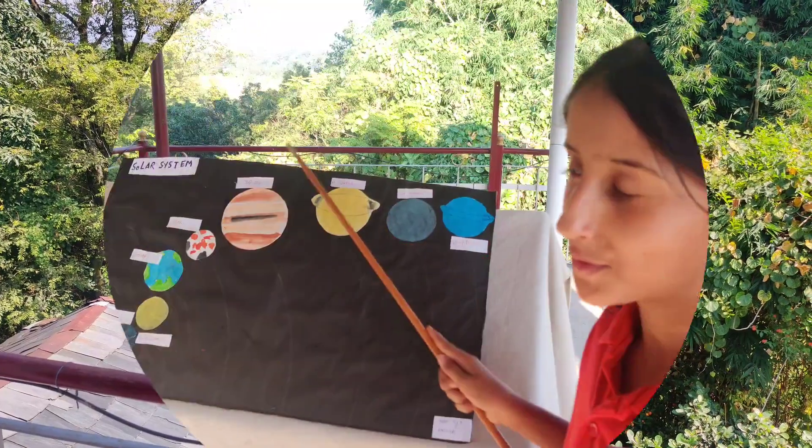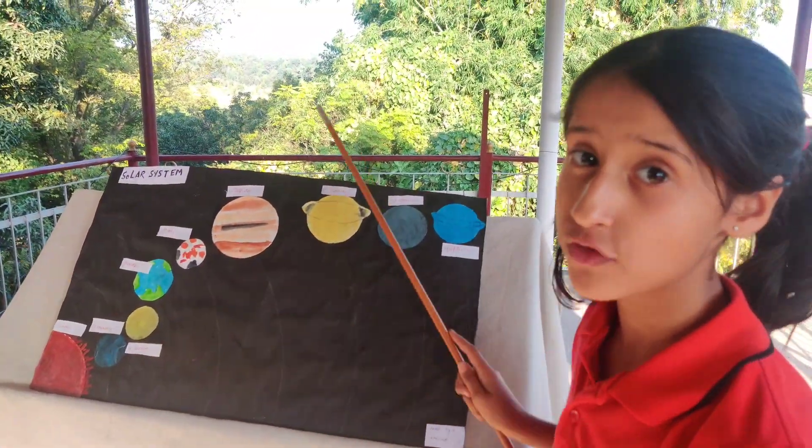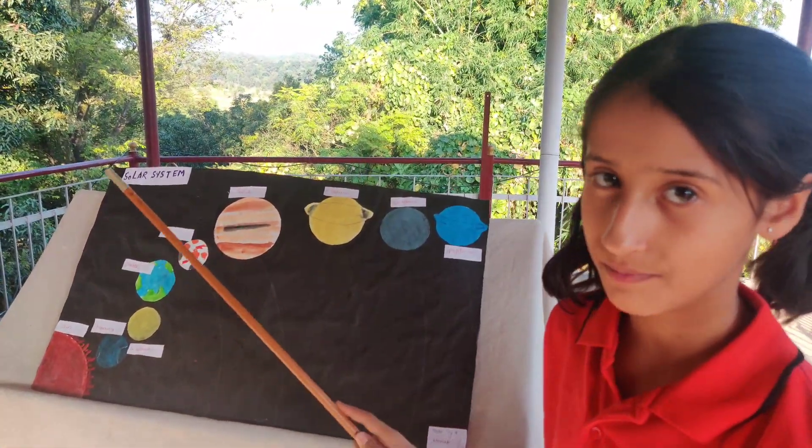The solar system consists of 8 planets and the sun. Let me show you with the help of a diagram. This is the diagram of solar system.